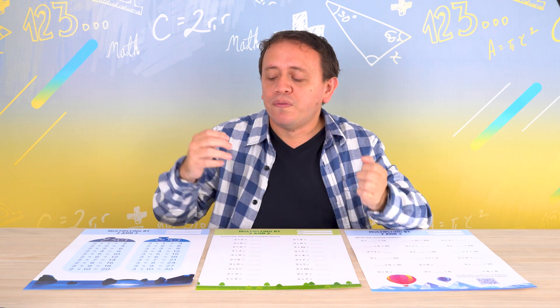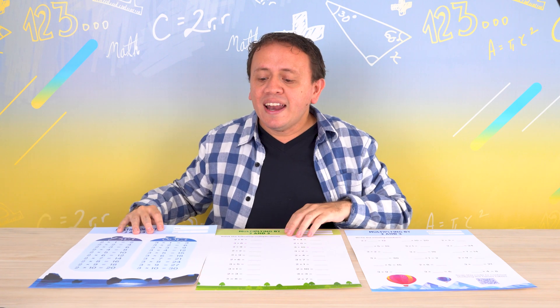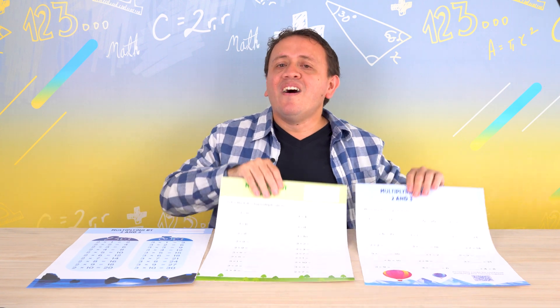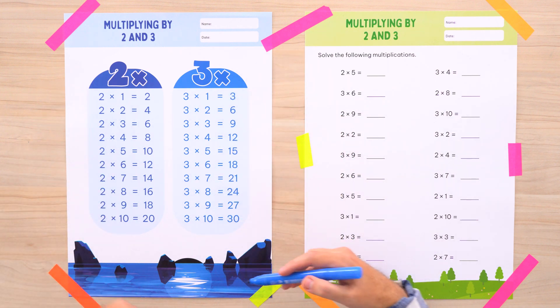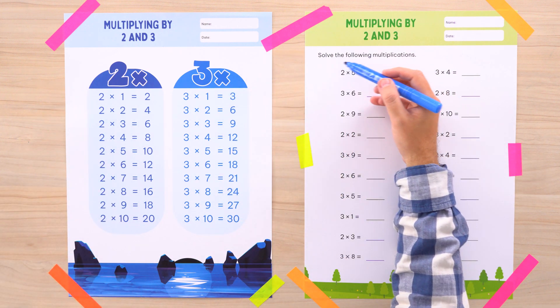Hi! Today we're going to solve a few exercises of the 2 and the 3 times tables. In the video information you will find a link for downloading a worksheet in PDF. In this worksheet you will find first the 2 and the 3 times tables and also a lot of exercises. We can solve some of them. Are you ready? From this side you have both times tables. Let's start with our exercises.